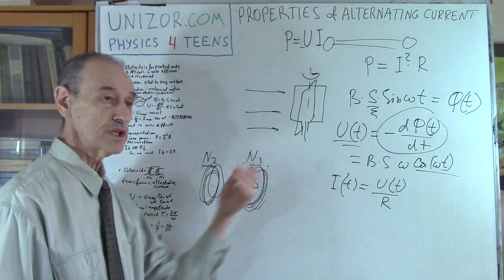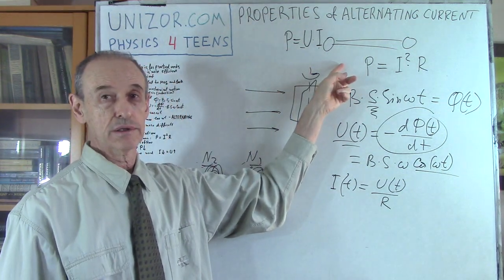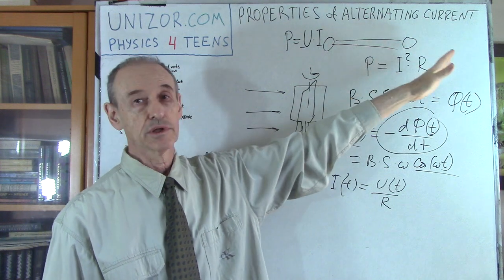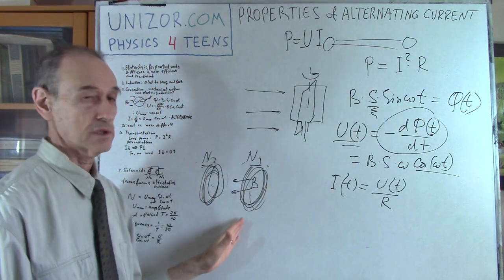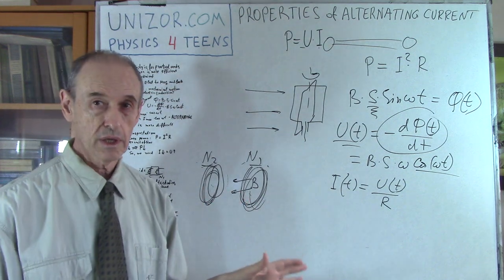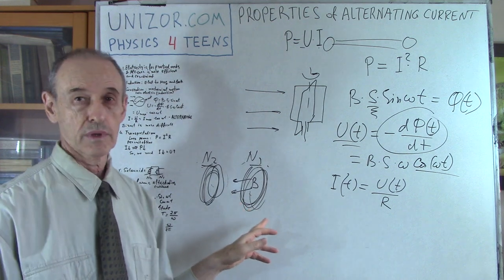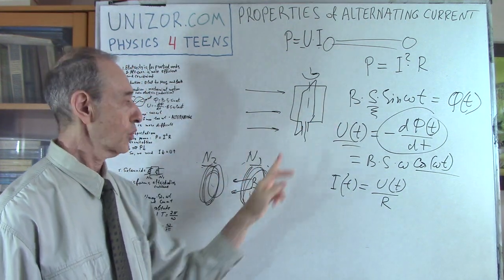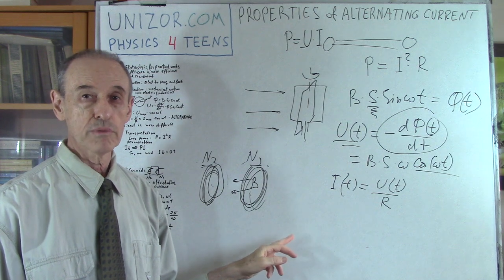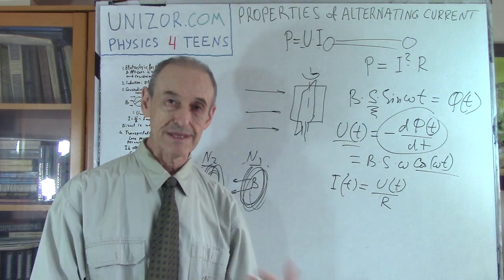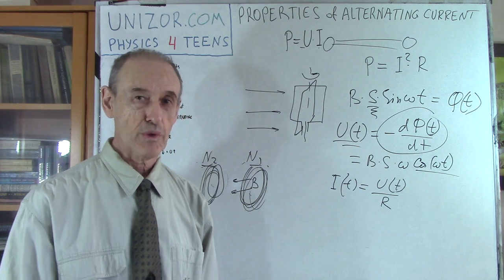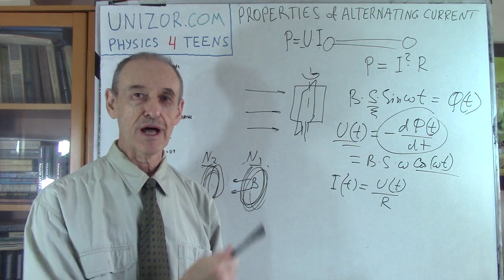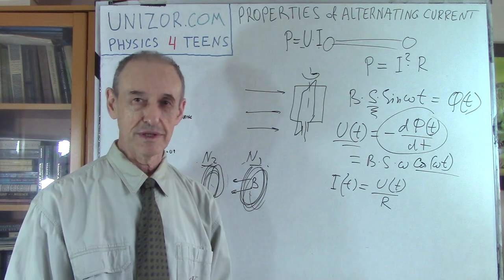We will go through the calculations in another lecture — it's an important topic how transformers are actually arranged. Transformers can increase voltage and decrease current on one end, or vice versa — decrease voltage and increase current on the consumer end. It's all done using transformers, which work only with variable electric current. Alternating current is not only easier to produce but also easier to transform with less power loss. That's why Edison lost his war of direct current against Westinghouse and Tesla, proponents of alternating current.